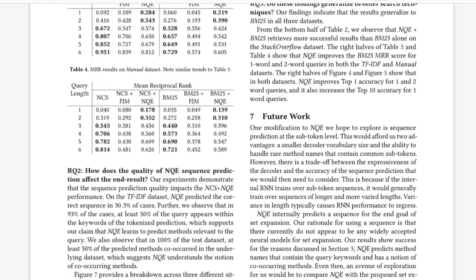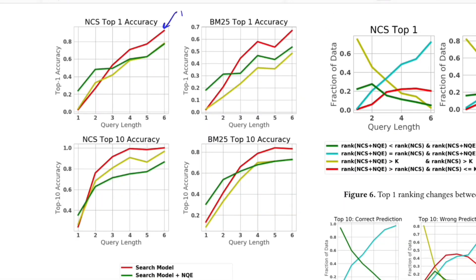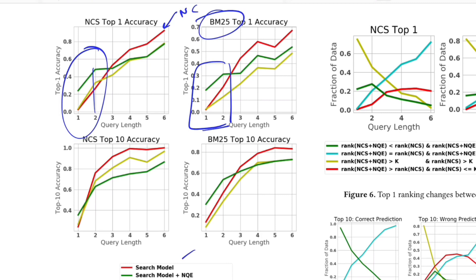Looking at results and experiments, the red line is NCS (the search model), the green is NCS plus NQE, and the third is a search model with frequent item set mining. For query lengths of 1 and 2, the search model with NQE performs much better compared to other methods — confirming their claim that NQE works for short queries. Similarly, for BM25, using BM25 with NQE also performs much better for short queries of length 1 and 2 compared to using BM25 alone.